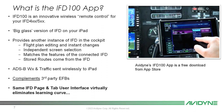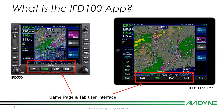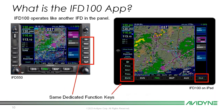ADS-B weather and traffic is sent wirelessly to your iPad from the IFD. You can see the same page and tab user interface. You see the IFD550 on the left and IFD on the iPad on the right, with the same dedicated function keys.